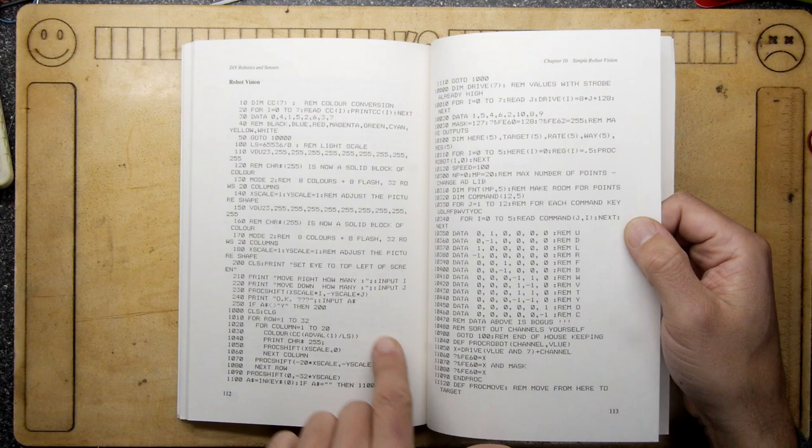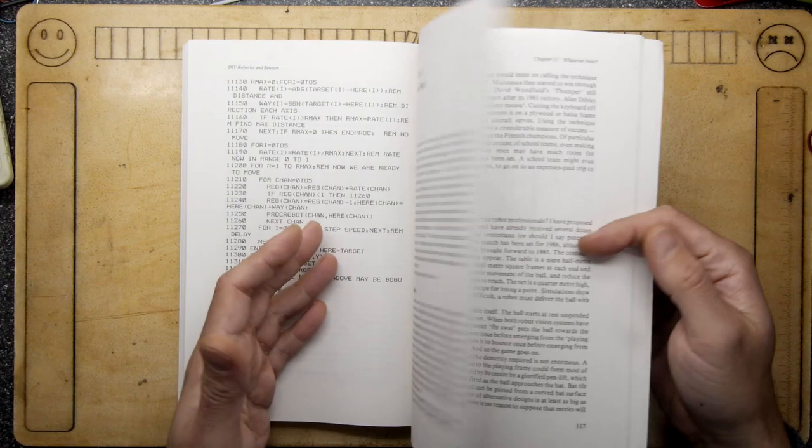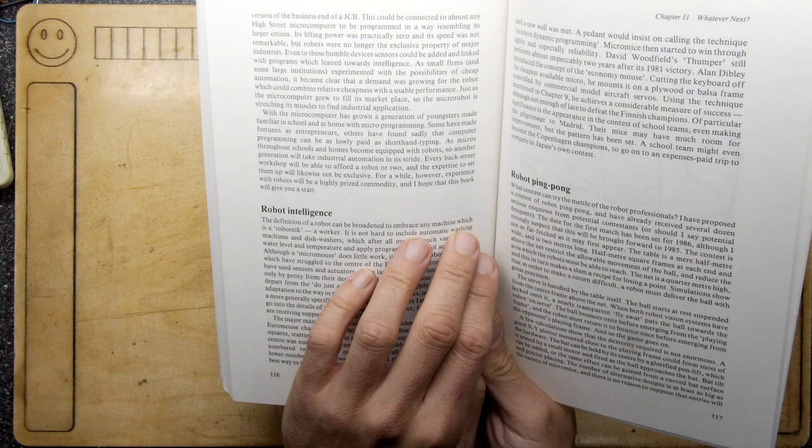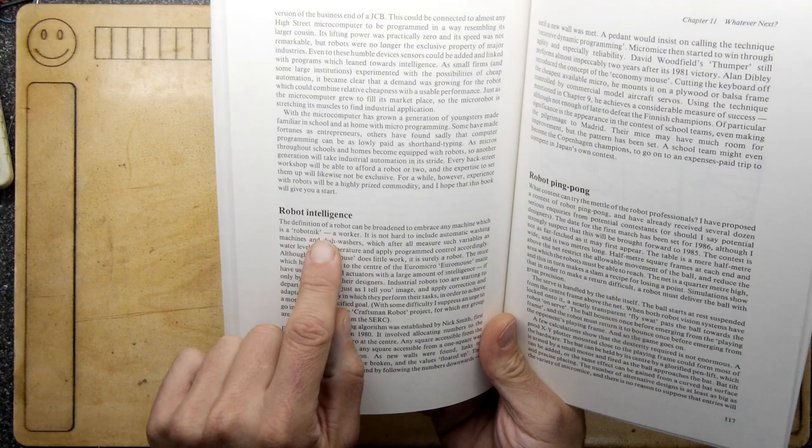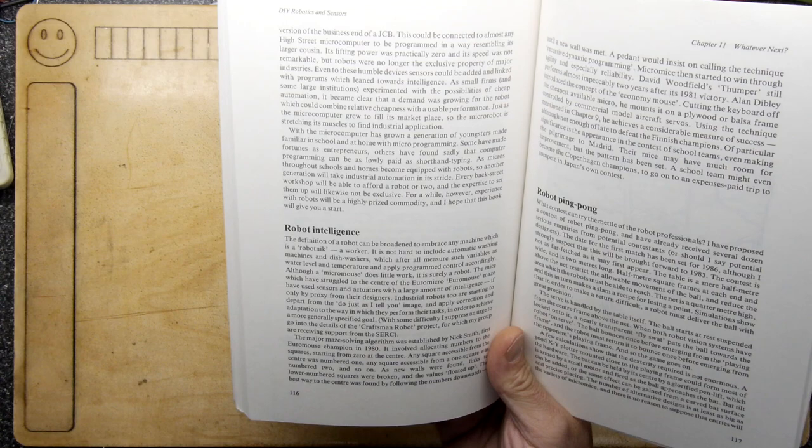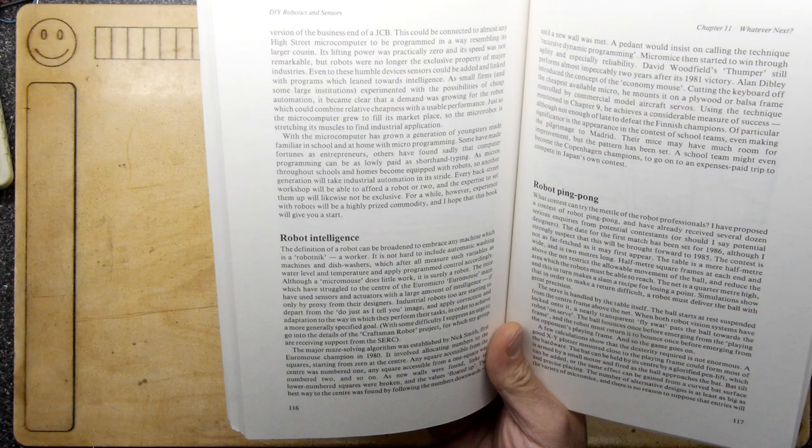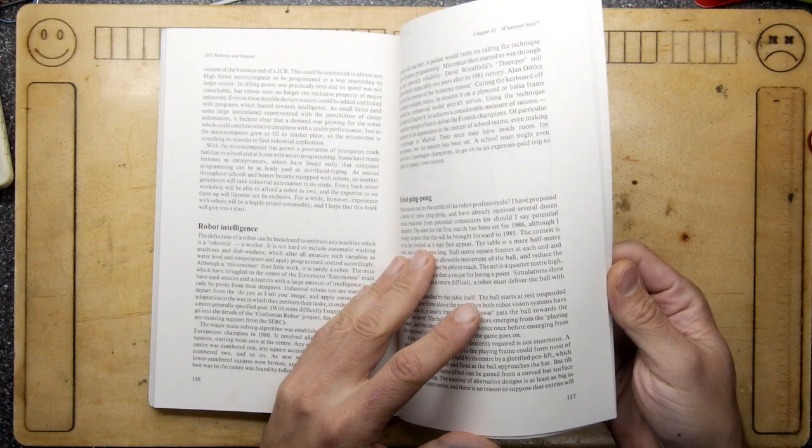Or is it maybe using the eye to actuate the motors? I think it could be. It's saying about robot intelligence: the definition of a robot can be broadened to embrace any machine which is a robotnik, which means a worker. It is not hard to include automatic washing machines and dishwashers which after all measure such variables as water level and temperature and apply programmed control accordingly. Although a micro mouse does little work, it surely is a robot. There you go. Robot ping pong. We can't all be Cambridge dons at the end of the day.